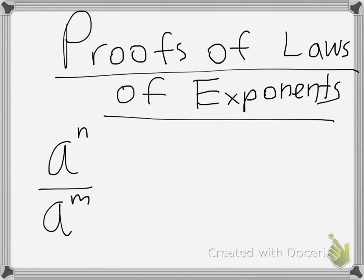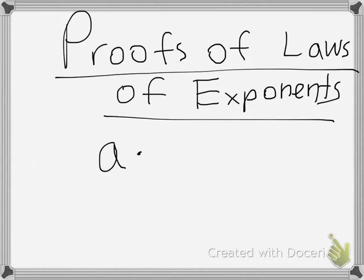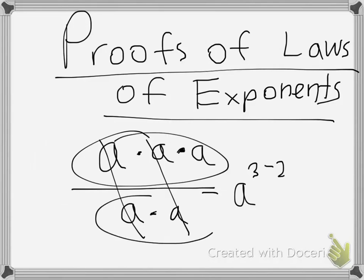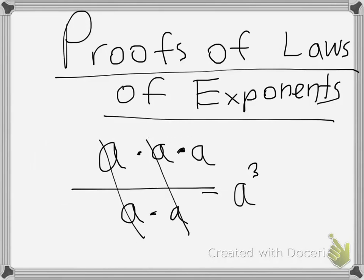We're going to do the same thing. If we take a to the n, so a times a times a, and we divide that by a different power of a, so a times a — to prove this, we just cancel these out and you get a to the 1, which is a to the 3 minus 2. There are three a's up here and two down here. So that's how you prove the second law.